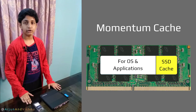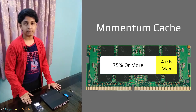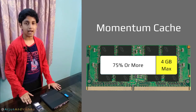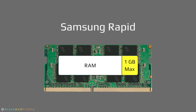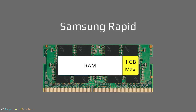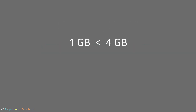Momentum Cache, according to the specifications, will allow a maximum of up to 25% of available RAM, and it is limited to a maximum of 4 GB. So it is clear why we chose 16 GB RAM as an upgrade — 25% of 16 GB is 4 GB, and we want Momentum to work at maximum capacity. Samsung also has similar software for a few of its SSDs called Samsung Rapid, but the allotted RAM is restricted to a maximum of 1 GB, which is quite less than Momentum's 4 GB. So our choice of SSD brand was clear and well justified.